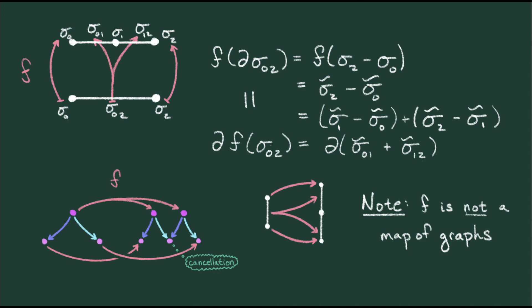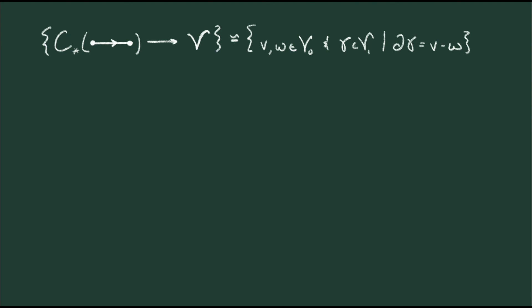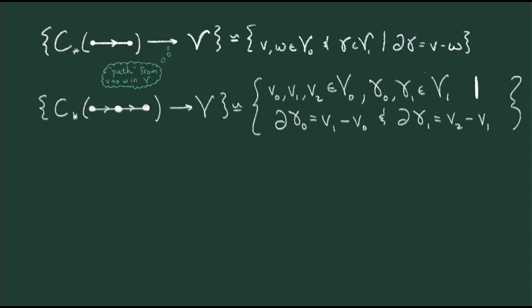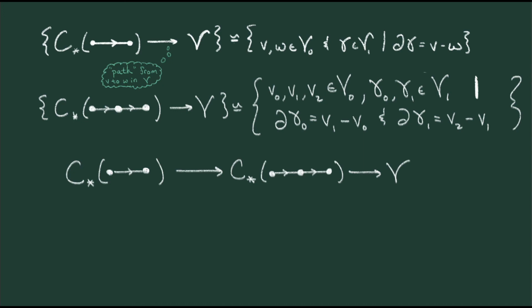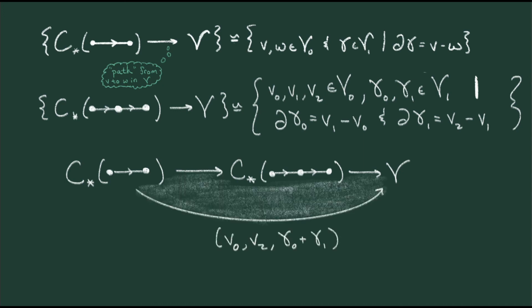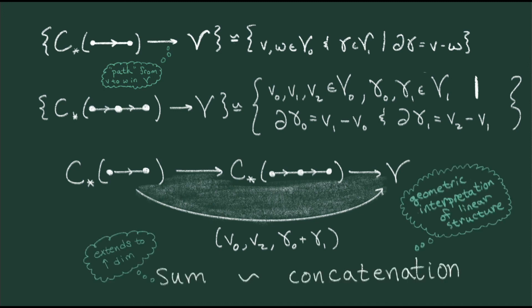So let's begin with a question: what is the data of a map out of the linearization of an edge? Well, it's just two elements in V_0 and an element of V_1. However, these maps need to be sufficiently continuous, which means that the boundary of the element of V_1 must be the difference between these two elements of V_0. Hence, we should think of this data as like a path in V. Now let's say we're given two paths in a general chain complex V so that the start of one is the end of another. This is precisely the data of a map out of the graph I constructed above. I can precompose this map with the map I constructed on the previous slide. Notice that this is simultaneously adding and concatenating the edges. This gives a more geometric interpretation of addition.